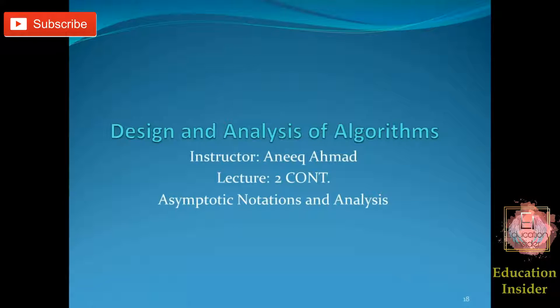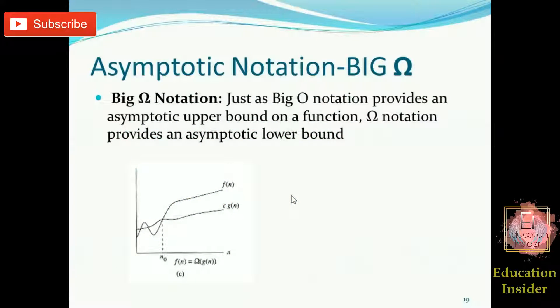So let's start with Big Omega. As described in part 1, let us discuss it briefly. Just same as Big O notation that defines upper bound, Big Omega defines lower bound on a function. As you can see in this graph, cg(n) is defining the lower bound of function f(n).